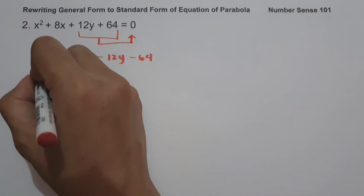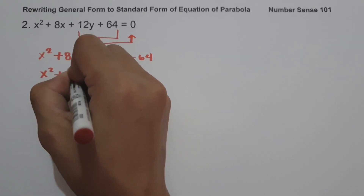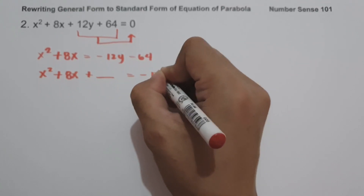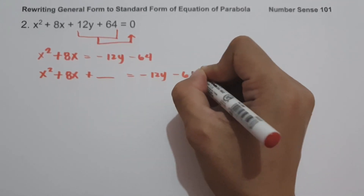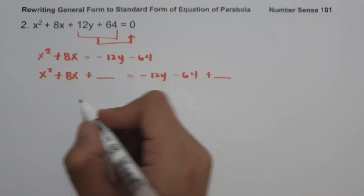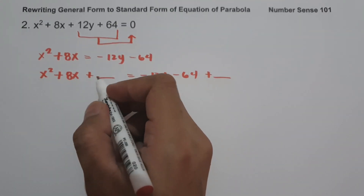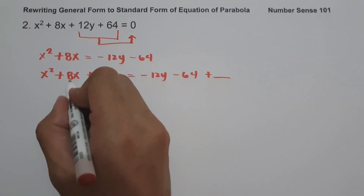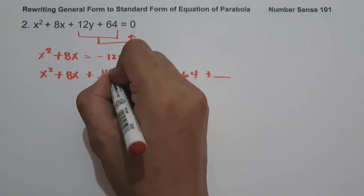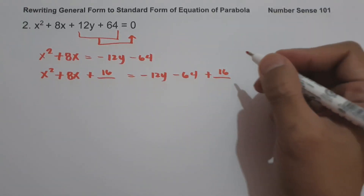Let us perform completing the square: x² + 8x + ___ = -12y - 64 + ___. What must be the number to make this expression a perfect square trinomial? Let us have 8 divided by 2, that is 4; 4² = 16. So we are going to add 16 on both sides of the equation.